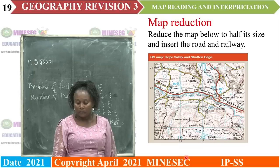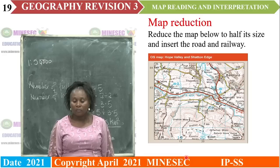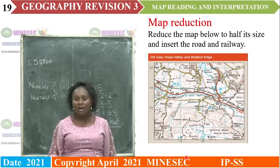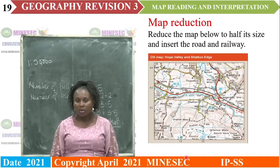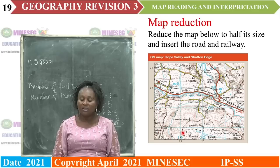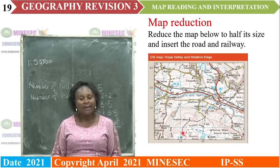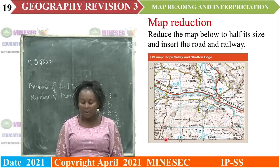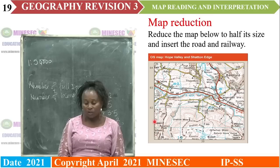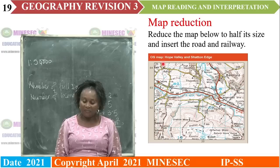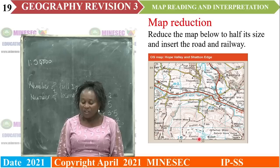The next is map reduction. Reduce the map below to half its size and insert the road and railway. To reduce a map, they have told us to reduce the map to half its scale. You may be asked to reduce the map by one third or a quarter — it depends on the fraction in which you have been asked to reduce. In map reduction, these are the steps you follow: measure the length and divide by the fraction. Here we have been asked to reduce the map by half, so we divide by two. Measure the width and divide by two. Measure the grid square and divide by two.